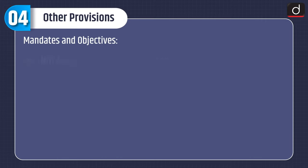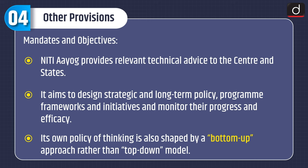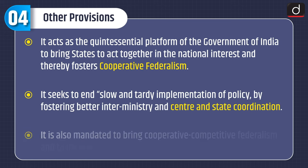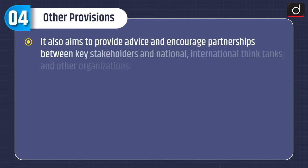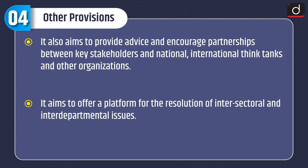Now let's discuss about some other provisions. First is Mandates and Objectives. NITI Aayog provides relevant technical advice to the center and the states. It aims to design strategic and long-term policy, program frameworks and initiatives and monitor their progress and efficacy. Its policy thinking is shaped by a bottom-up approach rather than a top-down model. It acts as the quintessential platform of the Government of India to bring states to act together in the national interest and thereby foster cooperative federalism. It seeks to end slow and tardy implementation of policy by fostering better inter-ministry and center-state coordination. It is also mandated to bring cooperative competitive federalism and to improve center-state relations. It also aims to provide advice and encourage partnerships between key stakeholders and national and international think tanks, and to offer a platform for the resolution of inter-sectoral and inter-departmental issues.